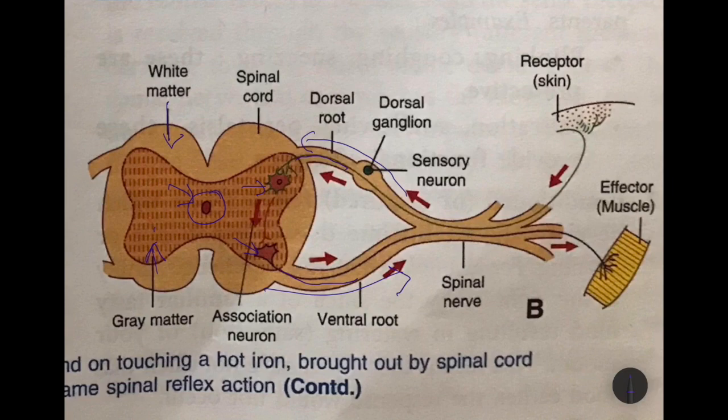The cerebrospinal fluid is a shockproof cushion and forms a medium for the exchange of food materials, waste products, and respiratory gases with the neurons. When we look at the spinal cord externally, it is covered by the same three membranes as the brain — dura mater, arachnoid, and pia mater — in continuation with those of the brain.